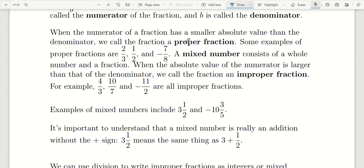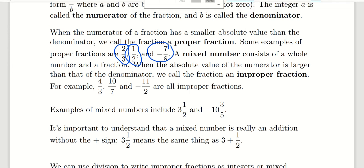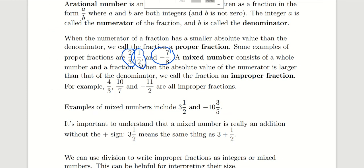We call a fraction proper whenever the numerator is smaller than the denominator. For example, proper fractions include things like 2 thirds, 1 half, and negative 7 over 8. These all have fractions where the numerator is smaller than the denominator, and that makes them what we call a proper fraction.